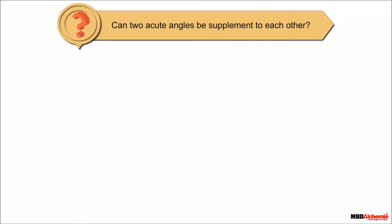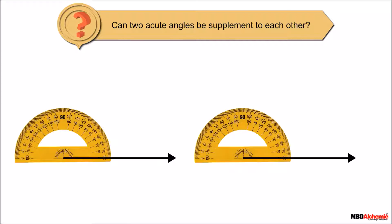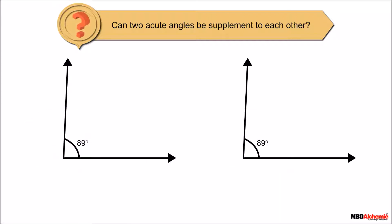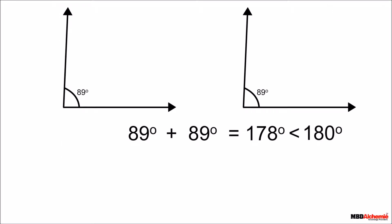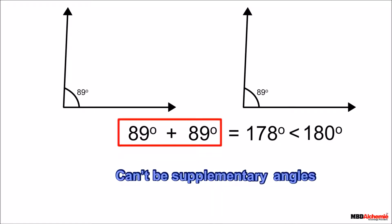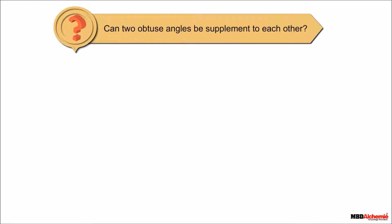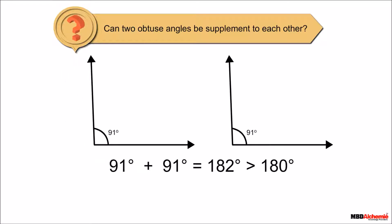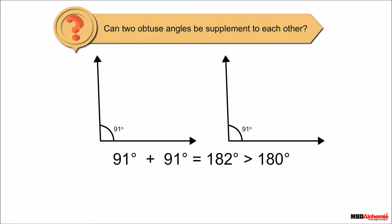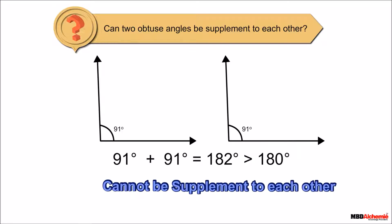Can two acute angles be supplementary to each other? Taking two angles of 89 degrees each, their sum is 178 degrees, which is less than 180 degrees. Thus, the sum of two acute angles cannot be supplementary. Can two obtuse angles be supplementary? Two angles of 91 degrees each have a sum greater than 180 degrees, so two obtuse angles cannot be supplementary to each other.